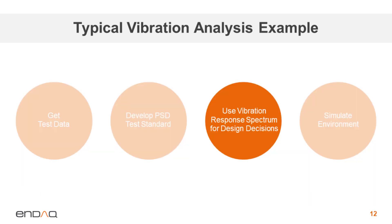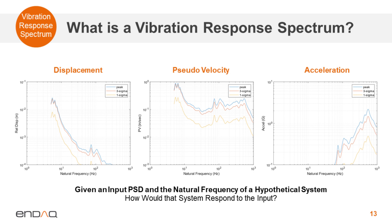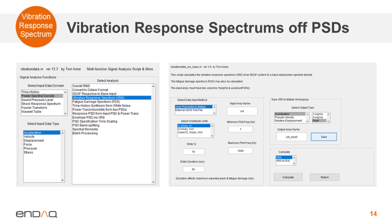Now that I have that standard, I'll proceed to using it with the vibration response spectrum to inform my design decisions. Steps two and three tend to be a little iterative — you use the vibration response spectrum off the test standard you developed to see if it fits and maybe tweak something. Many of you probably don't know what a vibration response spectrum is. It takes an input power spectral density and, over a range of different natural frequencies of a hypothetical system, tells you how that system would respond. You can use this to inform design decisions on where to avoid natural frequencies. The toolbox has a great built-in function to calculate this VRS from an input PSD.